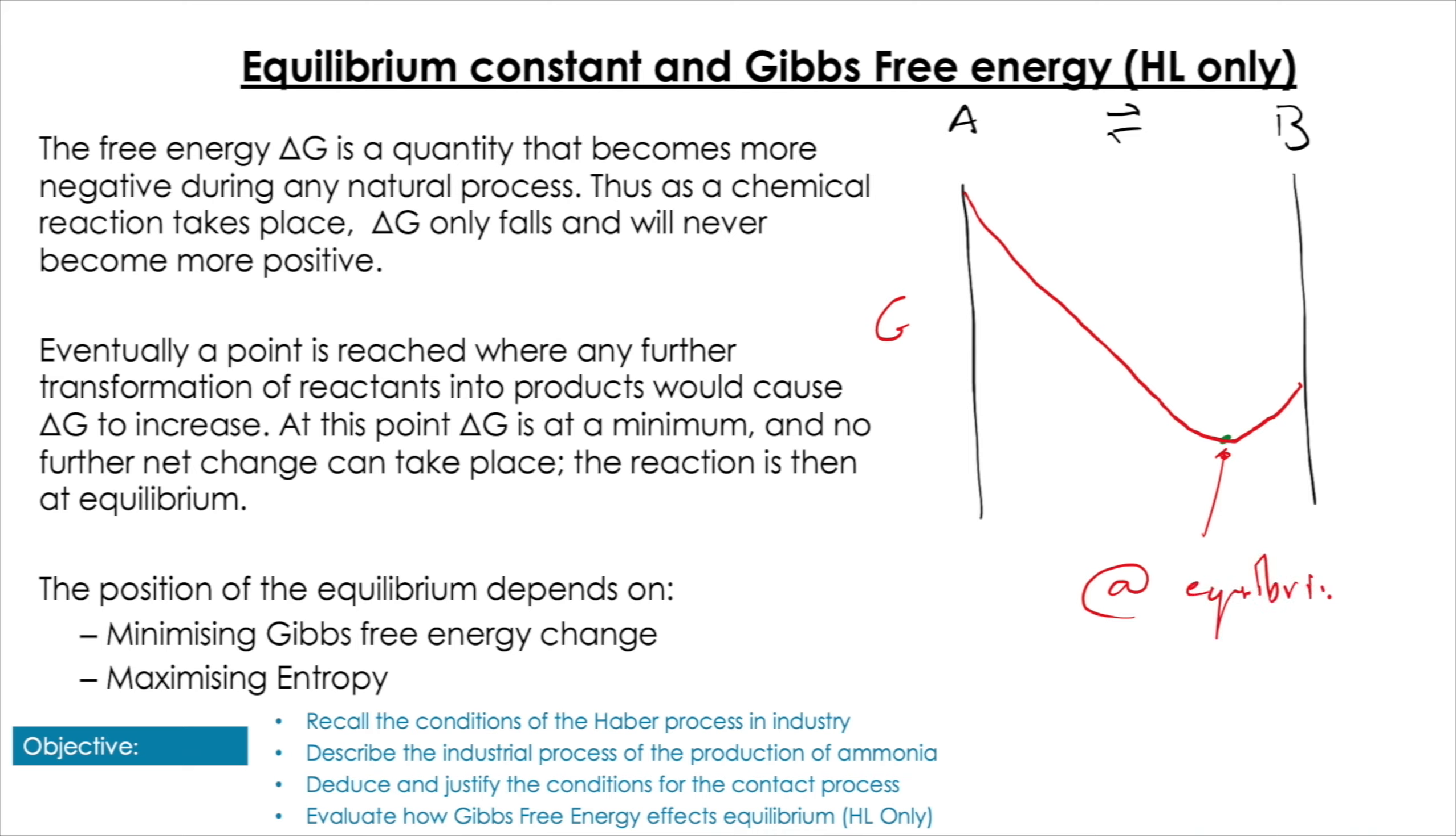No process spontaneously gains ΔG—we did that in Unit 5—but this is a measure of spontaneity. So the equilibrium is the point at which ΔG change has been completely eradicated. We've got zero change in ΔG.